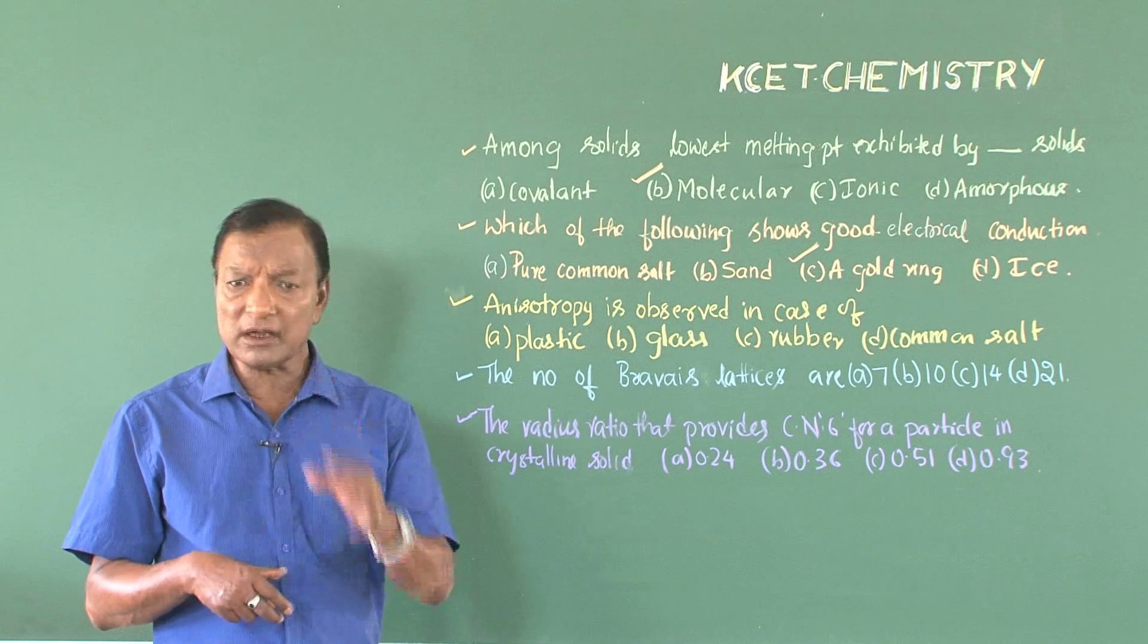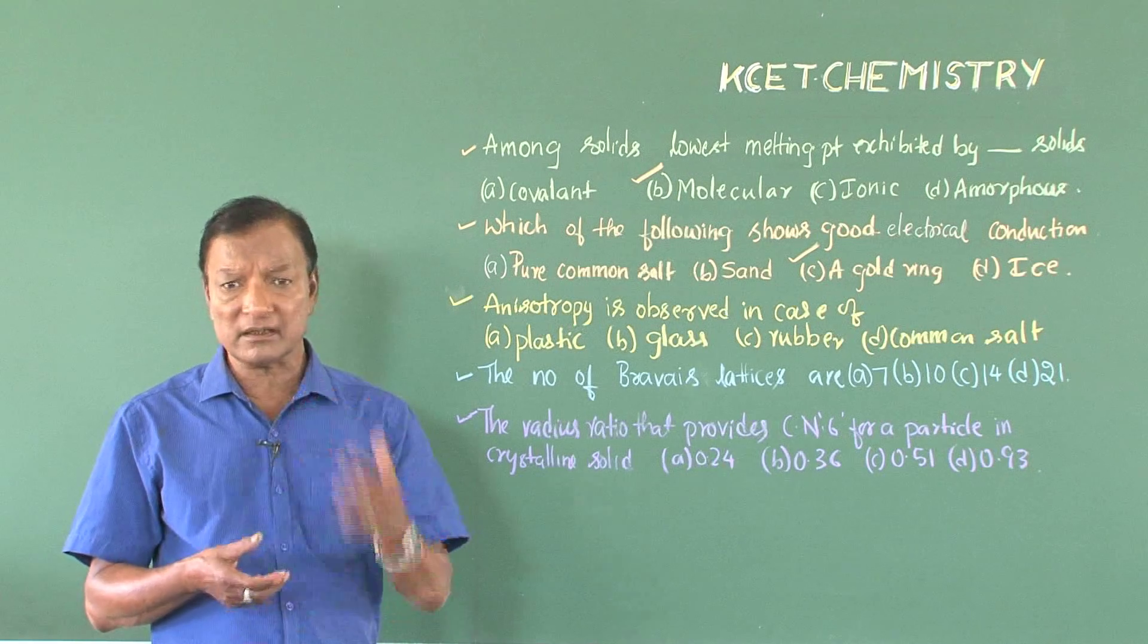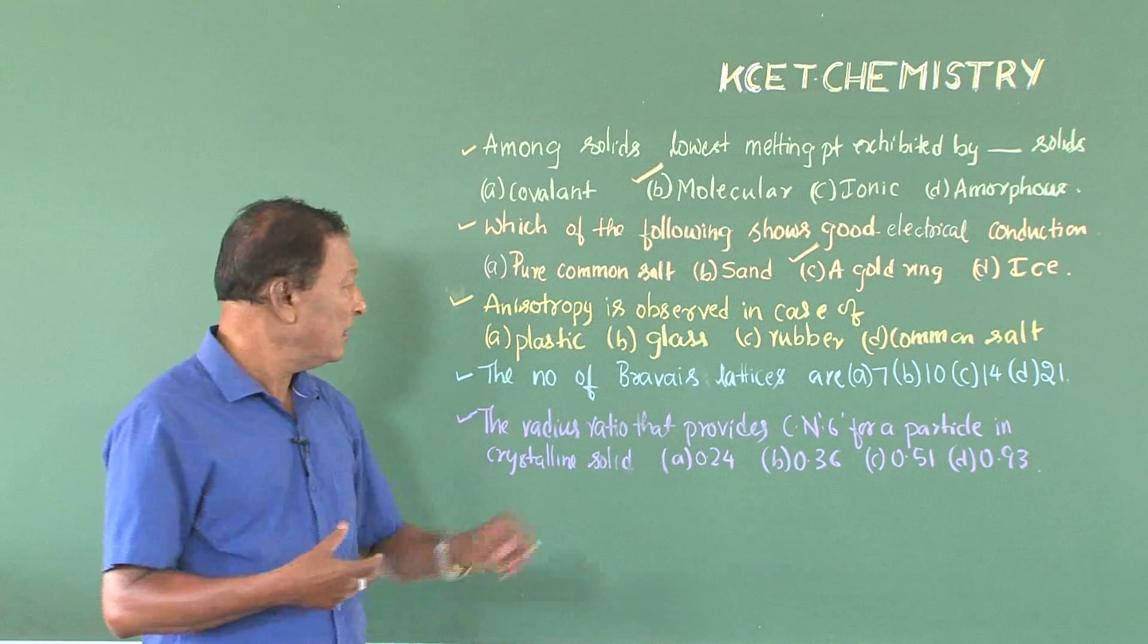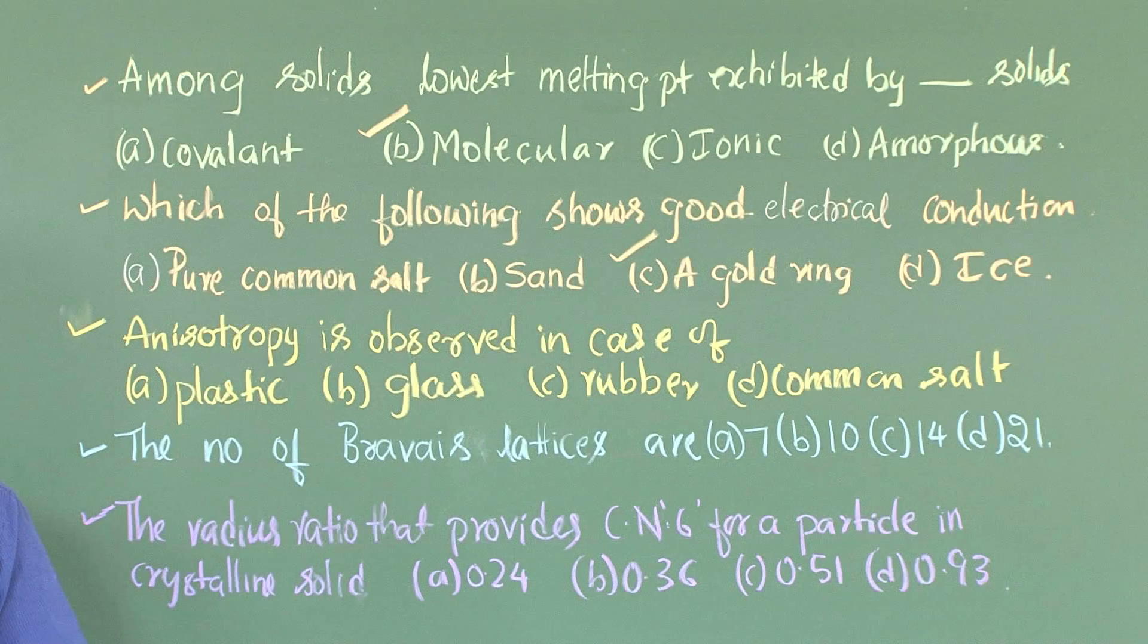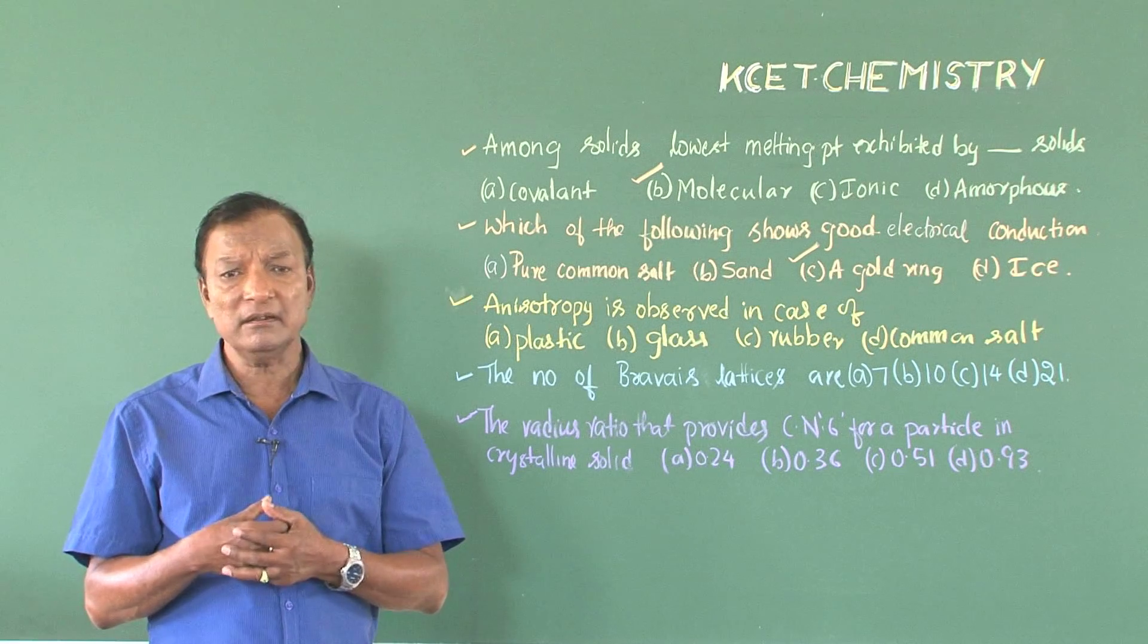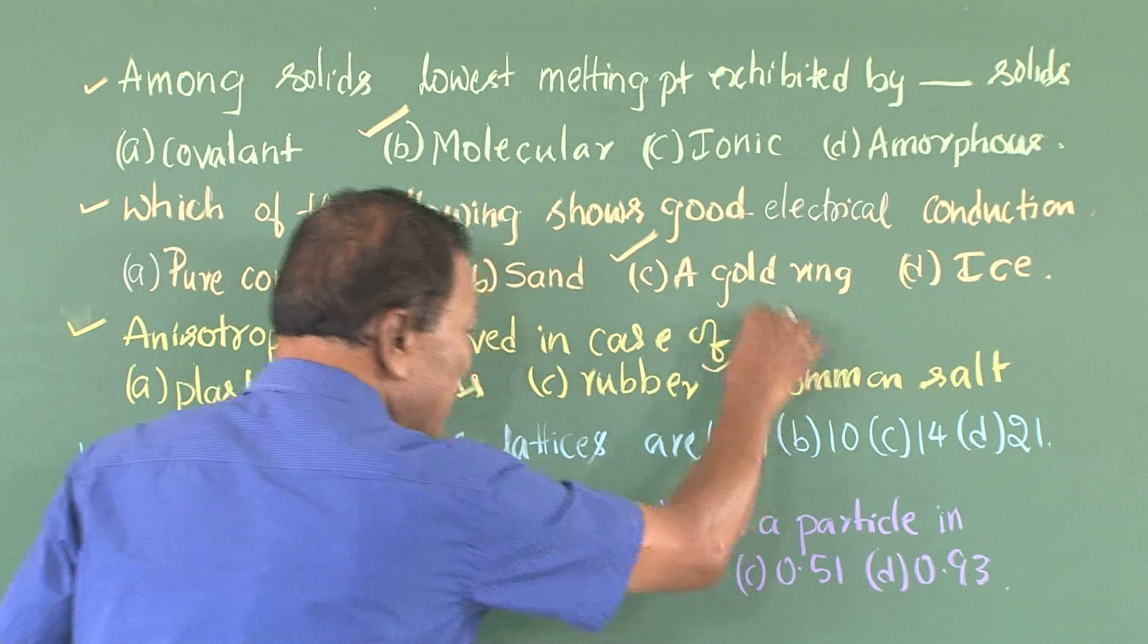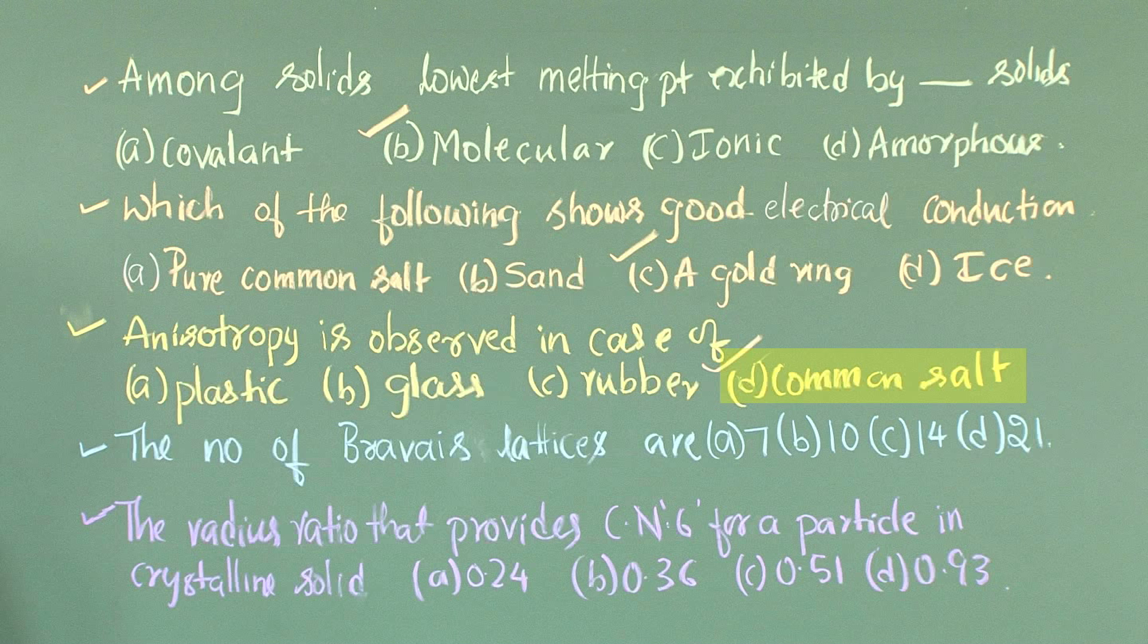Immediately we focus upon the common salt because it is the crystalline substance, and for crystalline substances, anisotropy is the characteristic. While the first three belong to the amorphous category. Wherein glass requires special attention because it is considered as the super cooled solid and super cooled liquid, and it is amorphous. Therefore, as the crystalline substance, we pick up common salt for this question as the correct option.